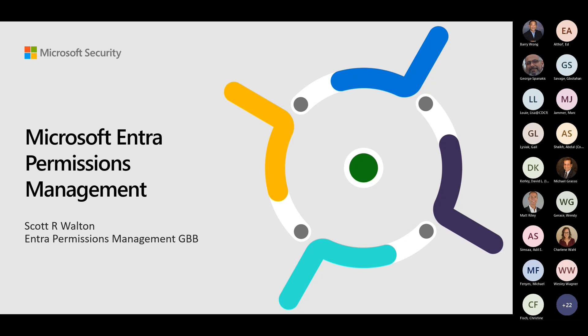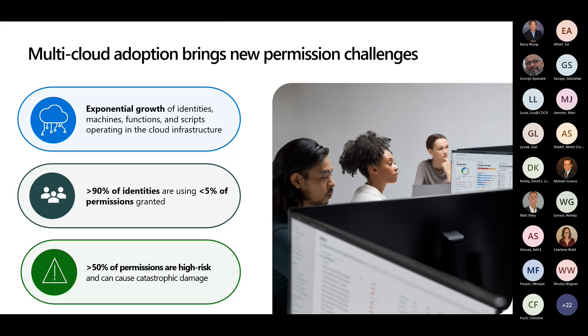Entra Permissions Management is the product of an acquisition Microsoft made about a year and a half ago. There was a company called CloudNox which was doing permissions management on multiple clouds. A lot of the problems our customers were having was that they were moving very quickly to the cloud, and all of these different identities were being created — managed identities, service principals, functions. People were asking: where did that identity come from? What does it do? What permissions have been given to it, and are those permissions appropriate?